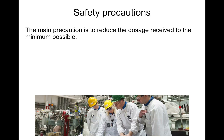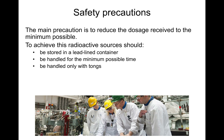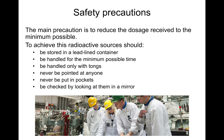The main safety precaution is to reduce the dosage received to the absolute minimum possible. Radioactive materials or sources should be stored in a lead-lined container, handled for the minimum possible time, and handled only with tongs. You should never point it at anybody, and never put it in your pocket. If you need to look at them - for example, to check yearly that they are not fractured - you should look at them using a mirror.